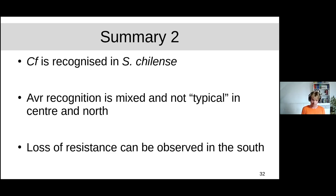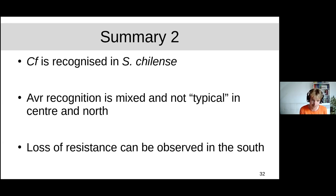Key conclusions from the Cladosporium system: Cladosporium fulvum effectors are recognized in Solanum chilense, showing that what was found in glasshouse settings is actually relevant in natural populations. But it is not typical — there is much more complexity. We really need to sequence these complete genes at much higher resolution. Most striking is the complete loss of resistance in southern populations — losing not just one receptor, but the whole recognition mechanism, including underlying signaling pathways.